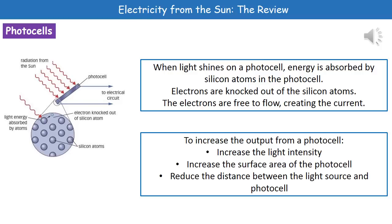The way in which a photocell actually works is that as the light shines on the photocell, the energy is absorbed by silicon atoms. As a result of that energy being absorbed by those silicon atoms, electrons become knocked out from the atom. Those electrons are then free to flow, which means that we generate a current.